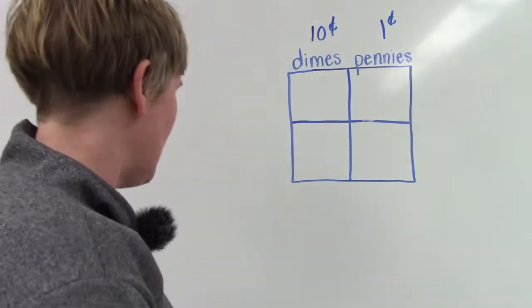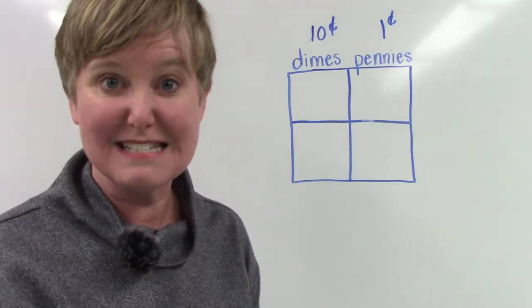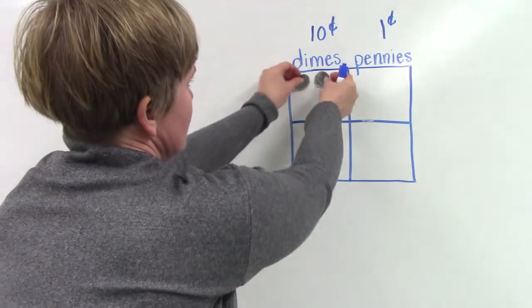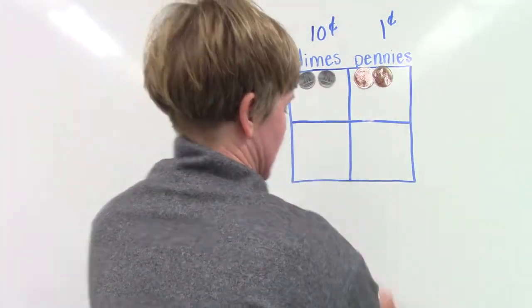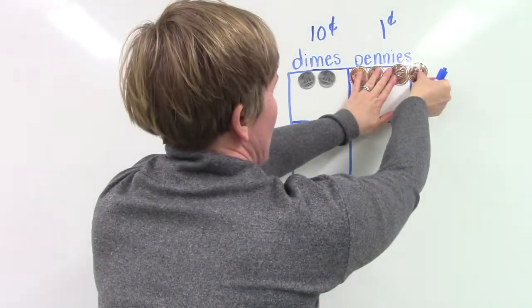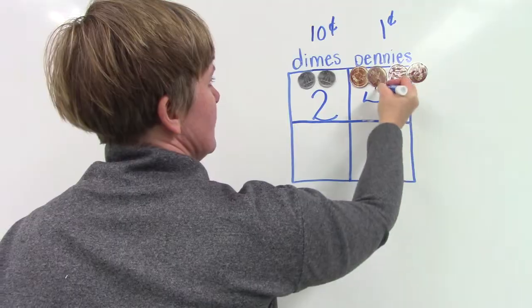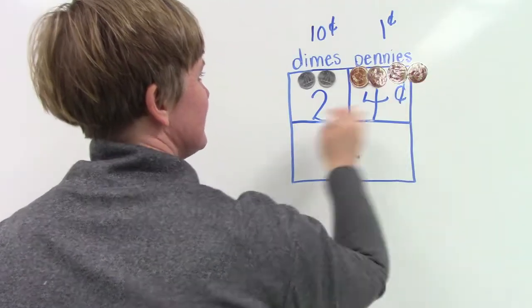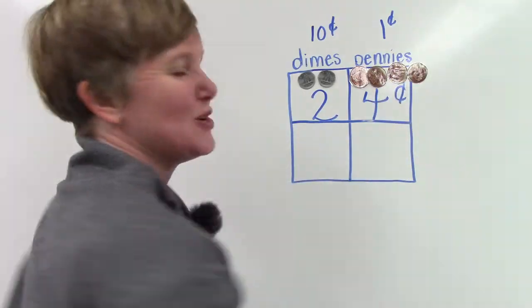Wow, what if we had 24 cents? That would be two dimes and four pennies. One, two, three, and four. 24 cents. 10, 20, 21, 22, 23, 24.